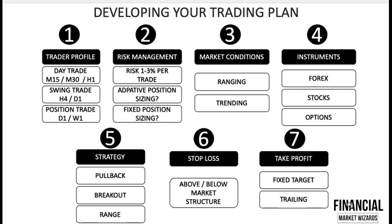Just as a brief recap: Step one is trader profile — match your lifestyle with what you like to do. Step two is risk management — the most important part. Step three is defining the market conditions your strategy revolves around. Step four is the instruments you wish to trade. Step five is the strategy, closely linked to market conditions. Step six is the stop loss — knowing when you are wrong so you can reduce losses. Step seven is how you take profit, since the market doesn't always trend one way.